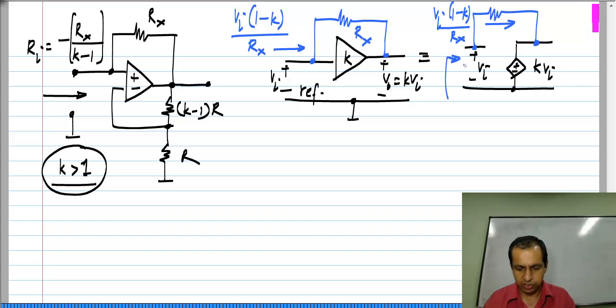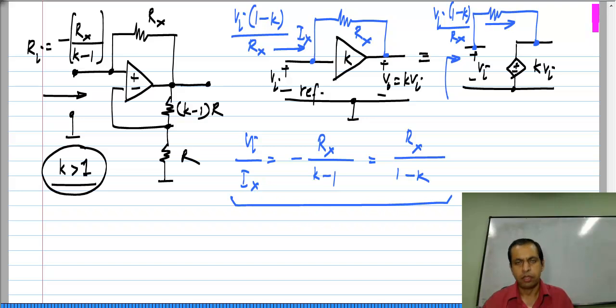The looking in resistance which is V i divided by I x, let me call this I x, is the same formula as before. It is minus R x divided by K minus 1, or R x divided by 1 minus K. By connecting a resistance between the input and output of the amplifier, you have an input resistance which depends on the gain of the amplifier. This is in general known as Miller effect.